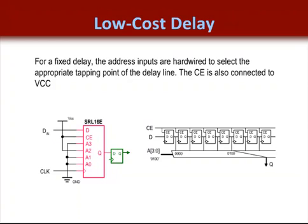The benefit of the SRL is that it saves users from having to add registers to balance a pipeline stage. A designer will often have to use registers merely to delay a data path so it balances with other data paths. A designer might end up using four registers on each bit of a 16-bit bus to balance a pipeline — that would normally require 64 flip-flops. But by using the SRL, a designer can instead use 16 LUTs to do the work of 64 flip-flops, a nice saving of dedicated resources.